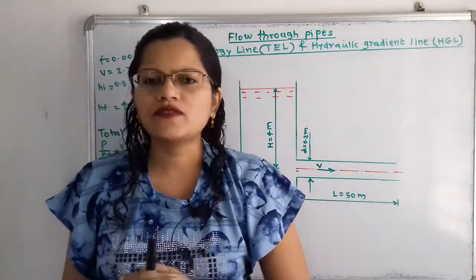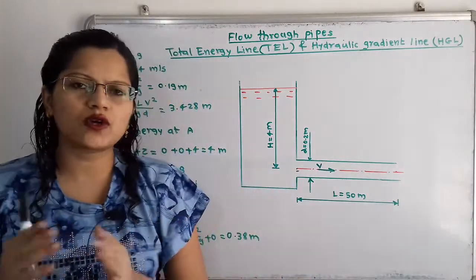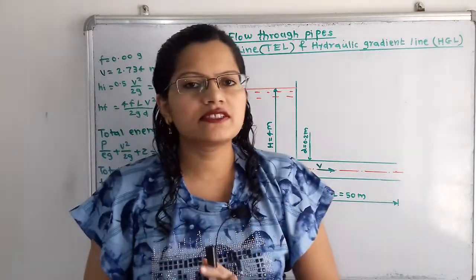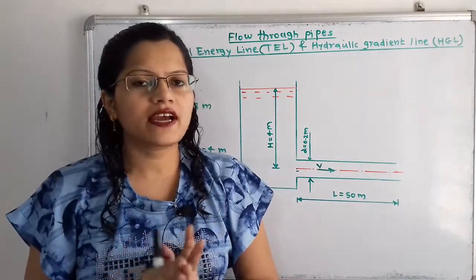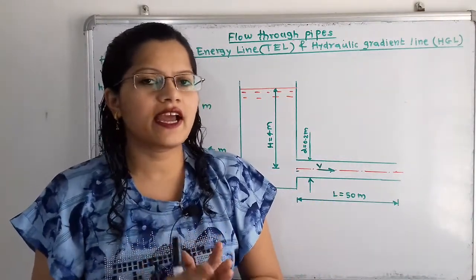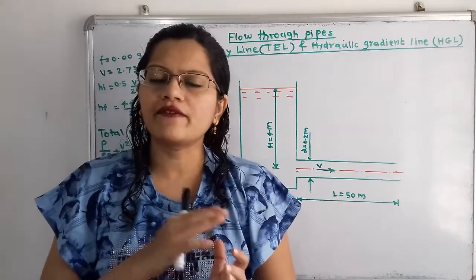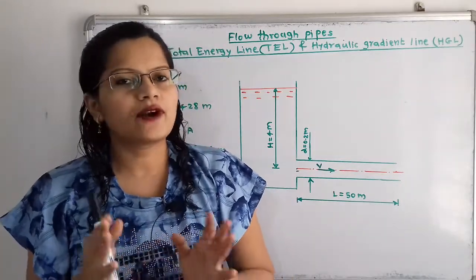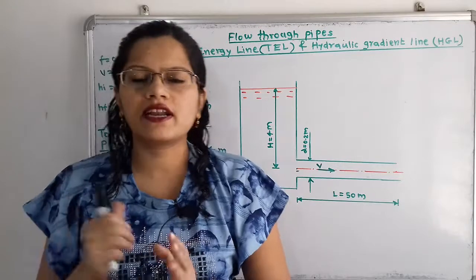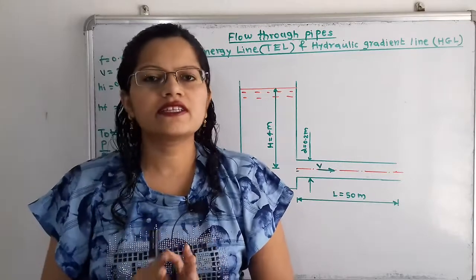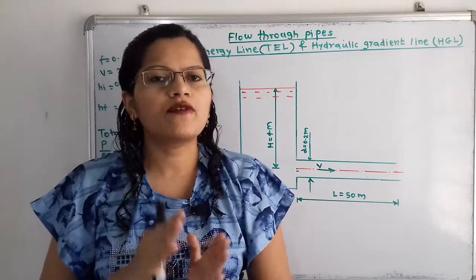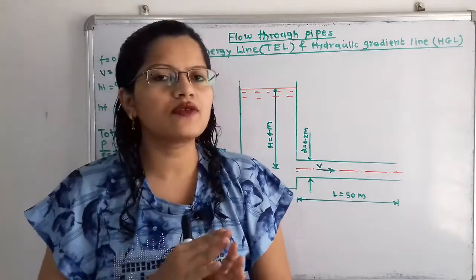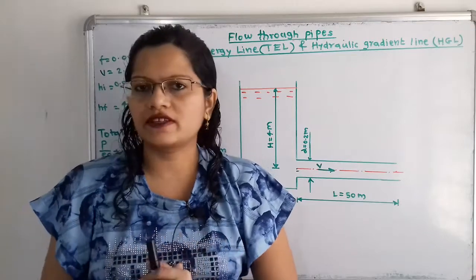Let us first understand what the total energy line is. It is the sum of pressure head, kinetic head, and datum head with respect to a reference line. The hydraulic gradient line is the sum of pressure head and datum head with respect to some reference line.